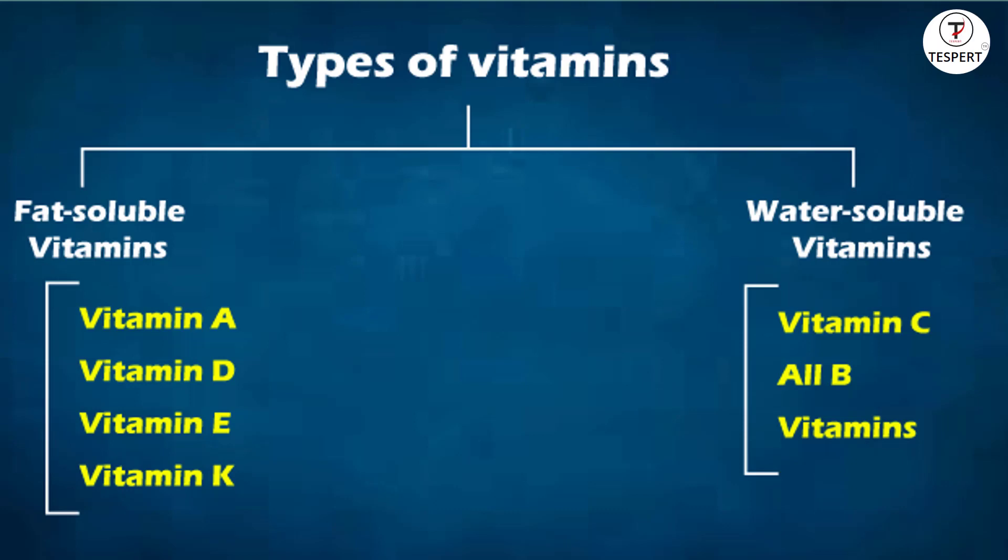Now moving on to water soluble vitamins. Here we have vitamin C and all vitamin B. Vitamin B is again classified into vitamin B1, vitamin B2, vitamin B3, and so on. Whatever categories come under vitamin B are all called water soluble vitamins. So the two main types are fat soluble vitamins and water soluble vitamins.